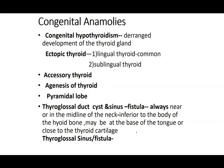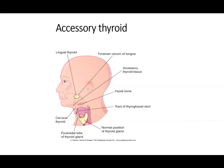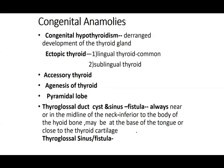Lingual thyroid is more common — just at the level of the tongue, where descent began. Sublingual thyroid is slightly lower. The thyroid gland can have agenesis — no development at all. The pyramidal lobe may or may not be present; it is an extension upward from the isthmus, normally absent but present in some individuals.